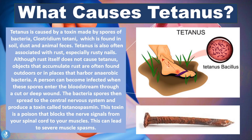A person can become infected when these spores enter the bloodstream through a cut or a deep wound — usually a puncture site from a sharp object, or even if someone falls in dust, soil, or animal feces contaminated with Clostridium tetani. The bacterial spores then spread into the central nervous system and produce a toxin called tetanospasmin, which blocks nerve signals from the spinal cord to the muscles, leading to repetitive and severe muscle spasms.